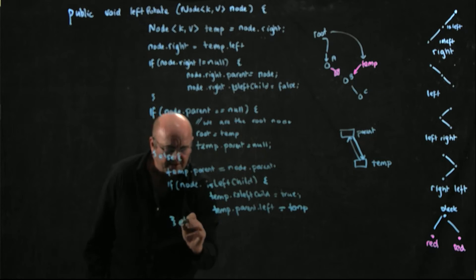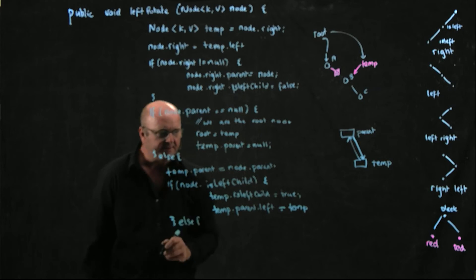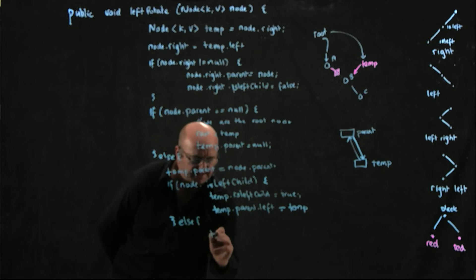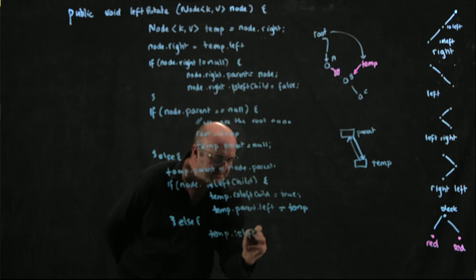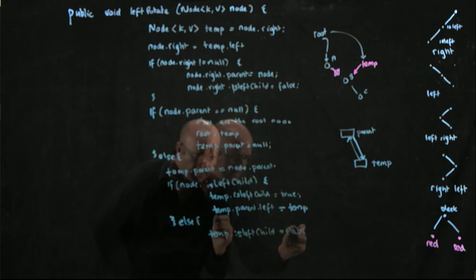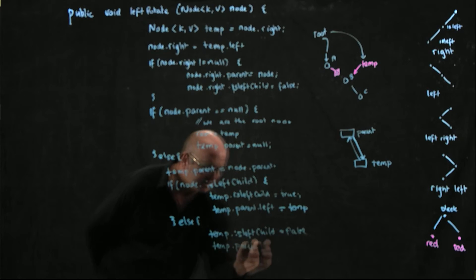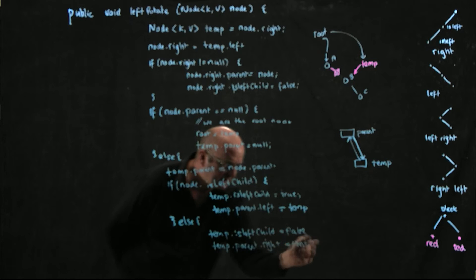If node is not a left child — that is, node is a right child — then we set temp dot isLeftChild equal to false, and we set temp dot parent dot right equal to temp.